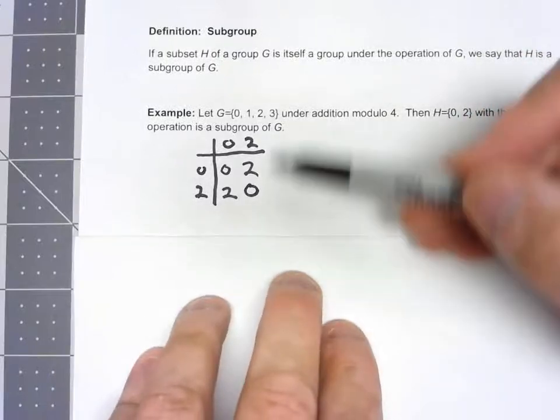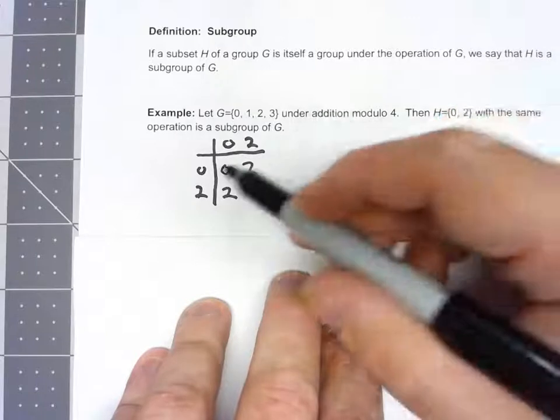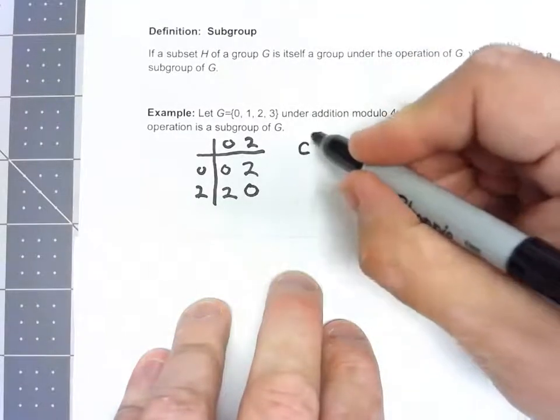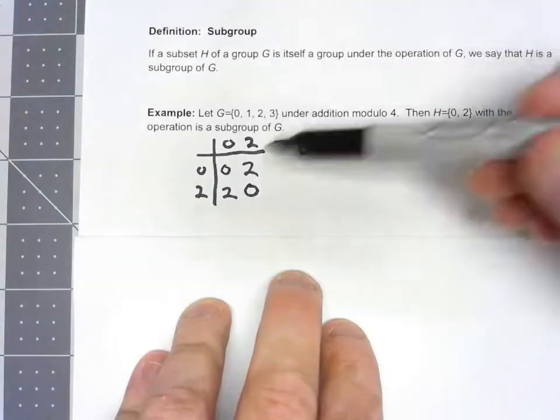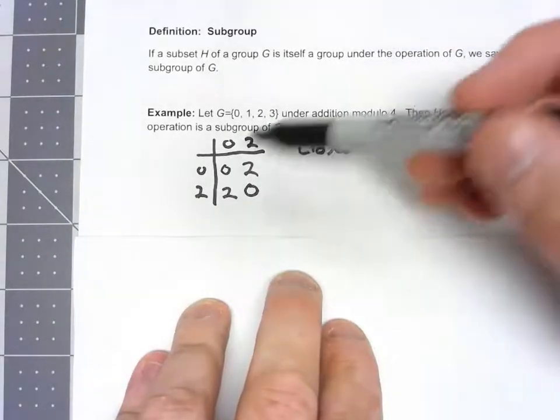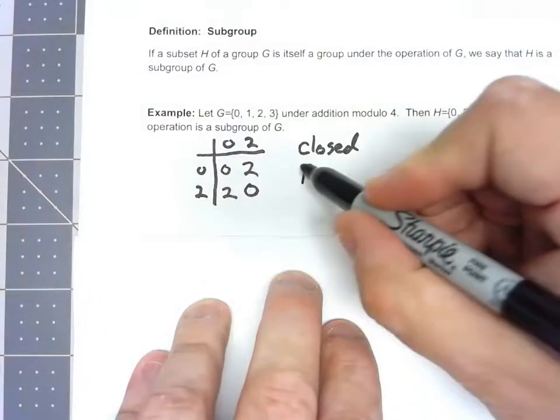So there's a number of things we should notice from this. First of all, notice that this operation is in fact closed. If I add two elements of H, I'm always getting another element of H. Certainly, it has an identity.